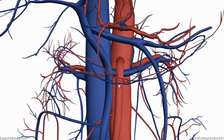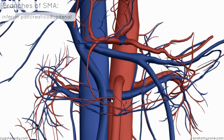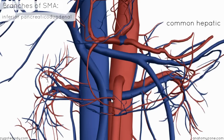The first branch that comes off the superior mesenteric artery is the inferior pancreaticoduodenal artery. This anastomoses with a branch of the gastroduodenal artery, which comes off the common hepatic artery of the celiac axis. If you watch the tutorial on the celiac axis, you'll see how these arteries anastomose. So the inferior pancreaticoduodenal artery is the first artery that branches off the superior mesenteric artery.